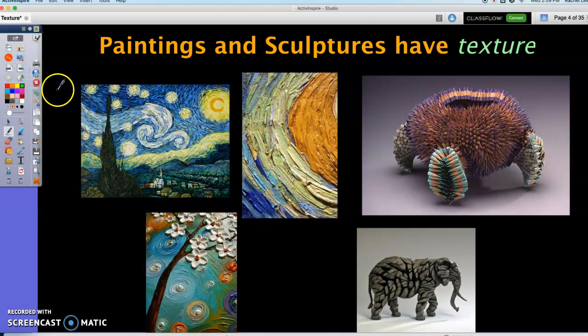Paintings and sculptures have texture. All of these works of art have actual texture. If we came up close to this painting, which is Starry Night by Vincent van Gogh, we're going to be studying this painting this school year, the texture would be bumpy. You can see the artist used a lot of thick paint, so if you looked at it up close, it would have a bumpy texture.